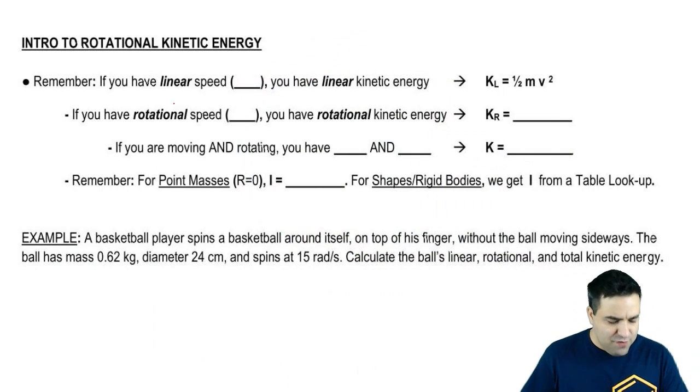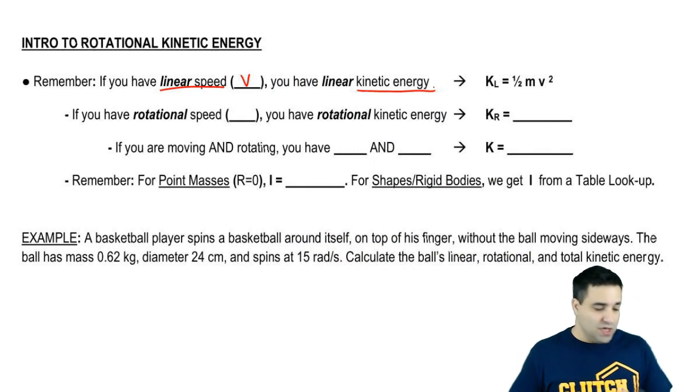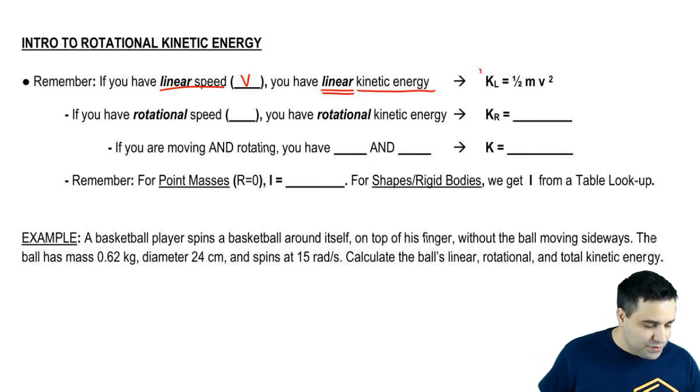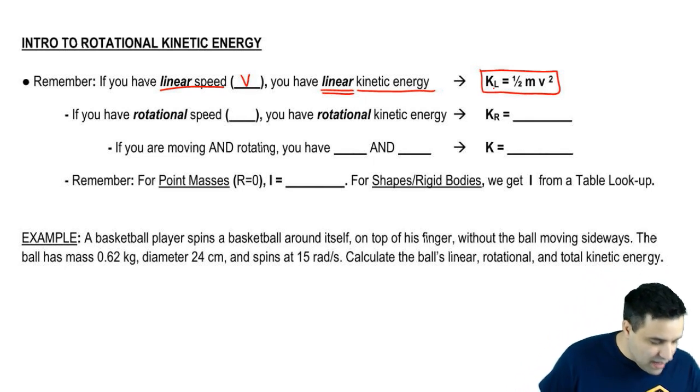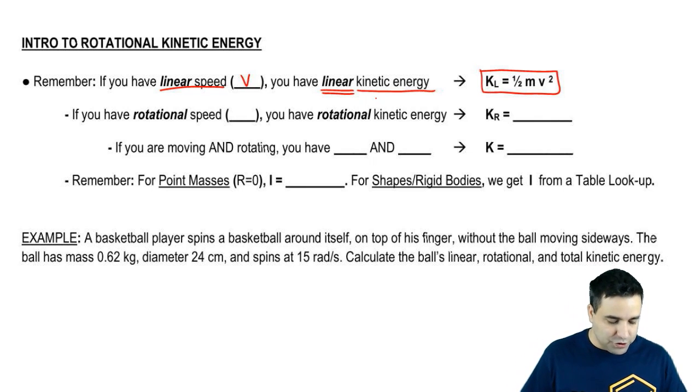All right, so if you remember, if you had linear speed, which is V, you had kinetic energy. Now there's going to be two types of kinetic energy, so we're going to specify that this is linear kinetic energy. And you're used to this equation K equals half mv squared. I put a little L there to indicate that this is the linear type of kinetic energy.